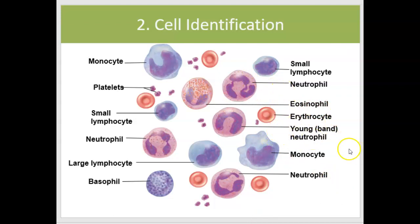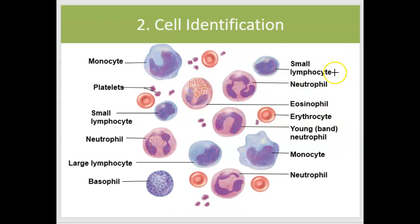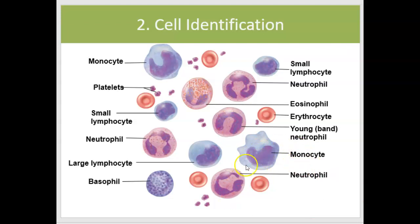The next most prevalent are lymphocytes, which are pretty easy to pick out because their nuclei tend to take up the entire cell — big nuclei, not much cytoplasm — and they tend to stain blue. Monocytes can sometimes be hard to differentiate from lymphocytes, but even though they have a large nucleus, they have a lot more cytoplasm. The nucleus always has a little indentation, making it look a bit like a horseshoe, so you'll always look for that indentation.